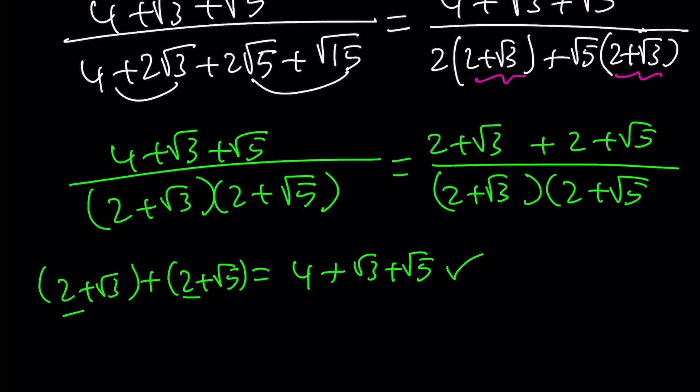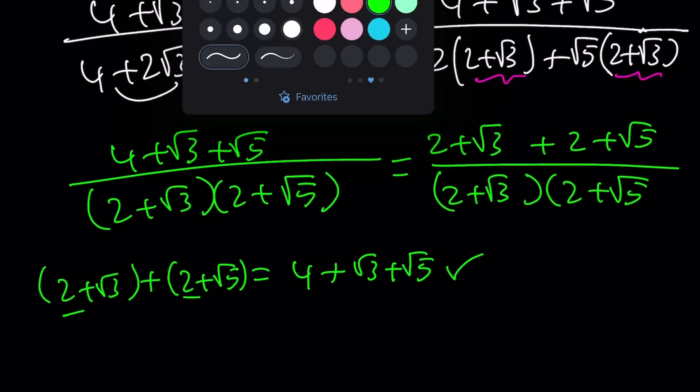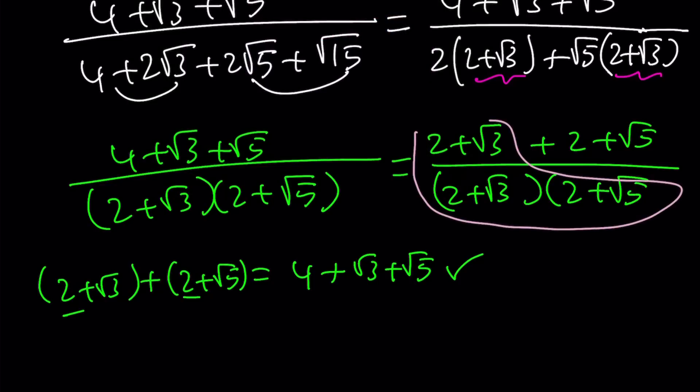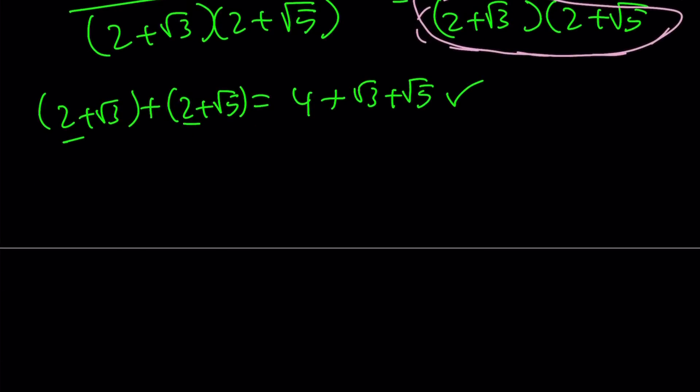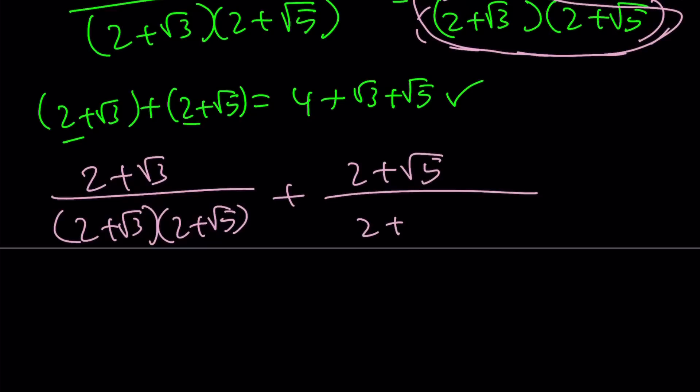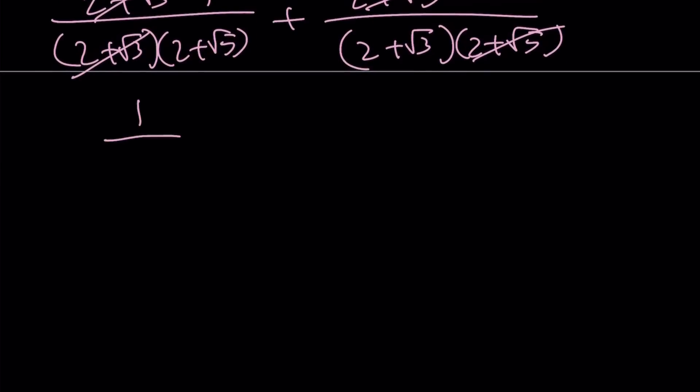We can go ahead and separate this. We can kind of split it up. That gives us the following: 2 plus root 3 over 2 plus root 3 times 2 plus root 5, and plus 2 plus root 5 over 2 plus root 3 times 2 plus root 5. And this can be simplified. 2 plus root 3 cancels to 1, 2 plus root 5 cancels to 1. And we get the following: 1 over 2 plus root 5 plus 1 over 2 plus root 3.